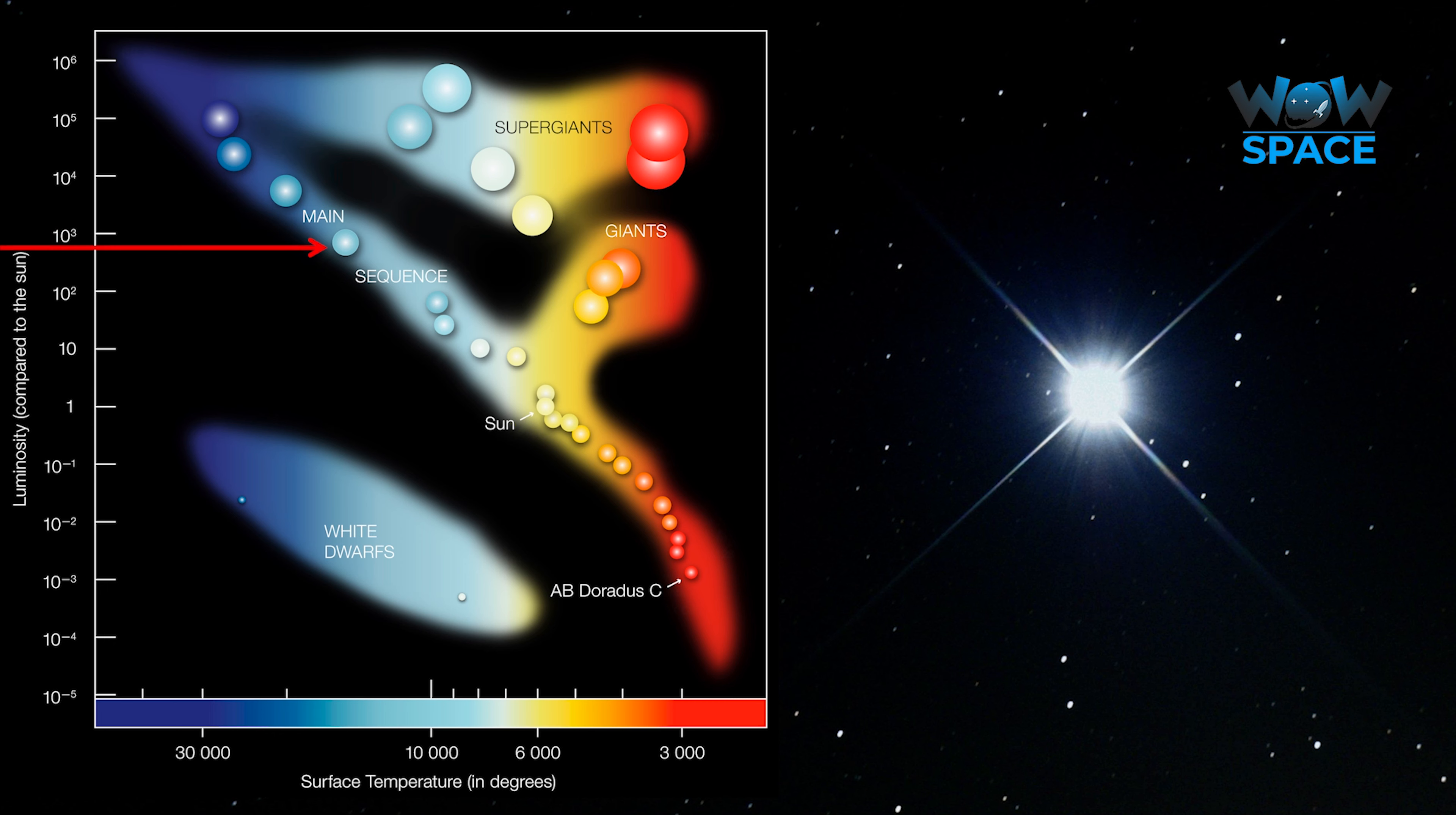However, the universe has given us one more measuring stick to work with, type 1a supernova. These are a very specific type of supernova, where in a binary star system, a dense white dwarf starts to cannibalize a larger red dwarf. Once the white dwarf hits a critical mass, the star becomes unstable and undergoes a runaway nuclear fusion reaction, producing an extremely bright event that can rival an entire galaxy in brightness.